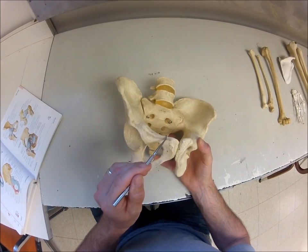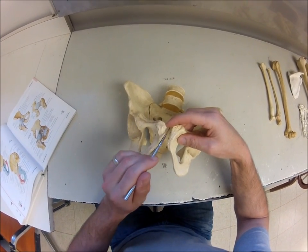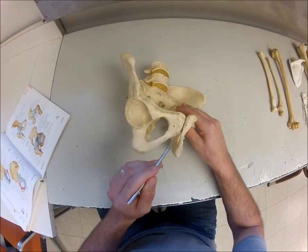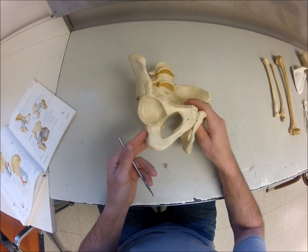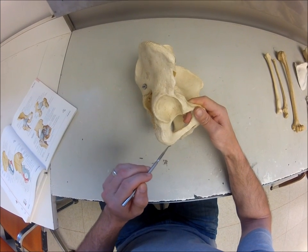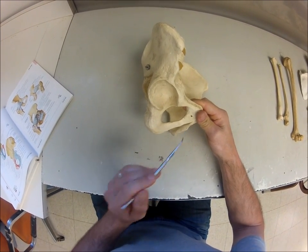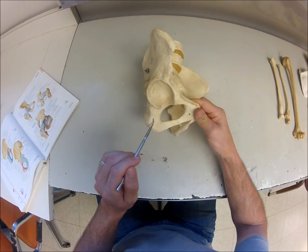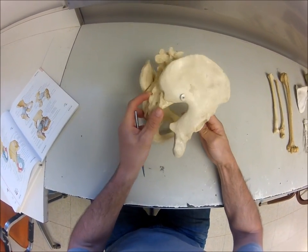Moving over towards the pubis bone, on the top is the pubic tubercle. In between the two halves of the pubis bone there's a fibrous piece of tissue — the pubic symphysis. The pubis bone has rami: a superior pubic ramus and an inferior pubic ramus, reaching out to join the ilium and down to join the ischium. The inferior pubic ramus and the ischial ramus join together, and between the pubis bone and the ischium and acetabulum we form the obturator foramen.